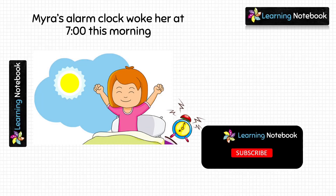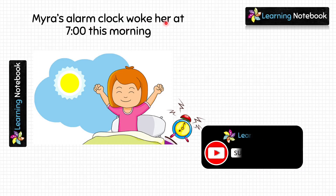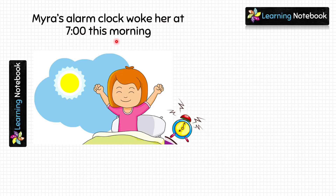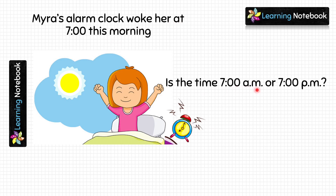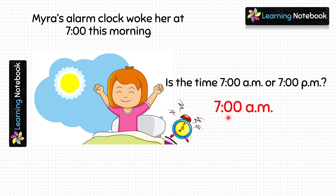Now students, let's come back to our previous question. Mayra's alarm clock woke her up at 7 this morning. The question is whether this time is 7 AM or 7 PM? It is 7 AM because this time is in the morning and it is after 12 o'clock midnight but before 12 o'clock noon. So it is denoted by AM, 7 AM.